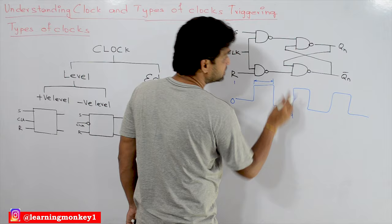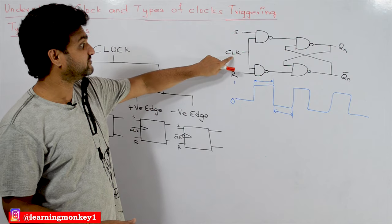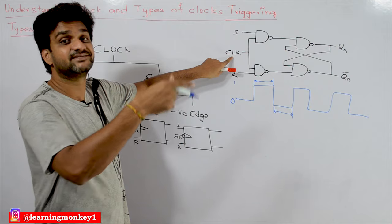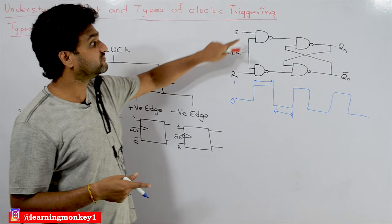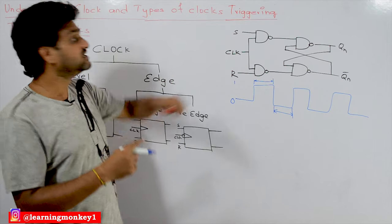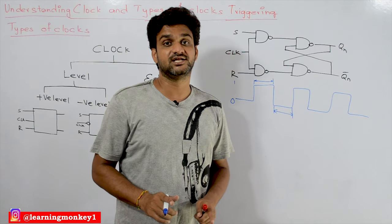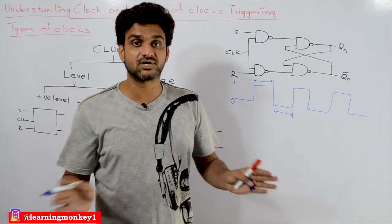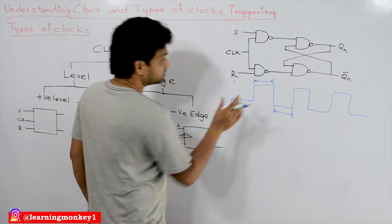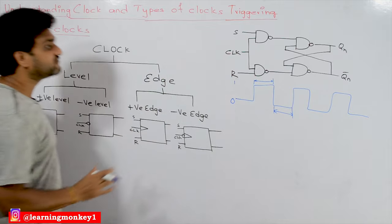Whenever this level happens to be false — which means whenever the level is 0 — the circuit remains as it is. The logic behind this is: whenever the clock is 0, the circuit is in latch mode, and whenever the clock is 1, the states will change and memory will change based upon the inputs. This is what we call the level triggering mechanism.